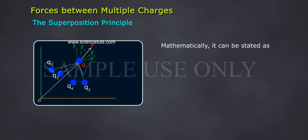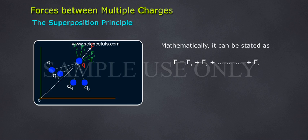Mathematically, it can be stated as F bar equals F1 bar plus F2 bar plus so on, plus Fn bar.